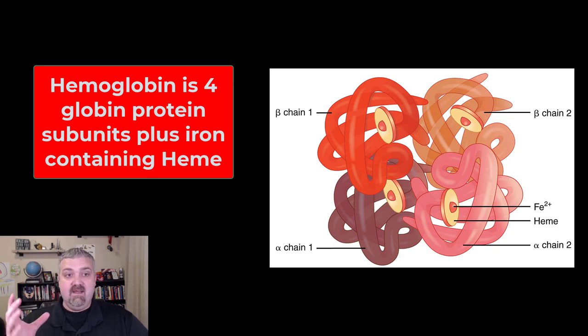The protein itself is these four globin molecules - four separate protein subunits put together. Then we have heme. Heme is the red pigment that carries the iron. It's a combination of proteins and heme which carries iron.